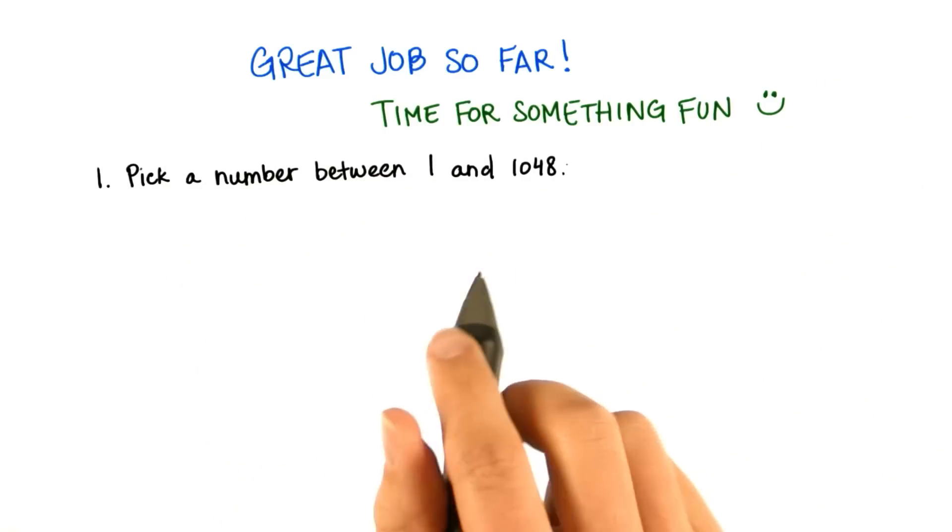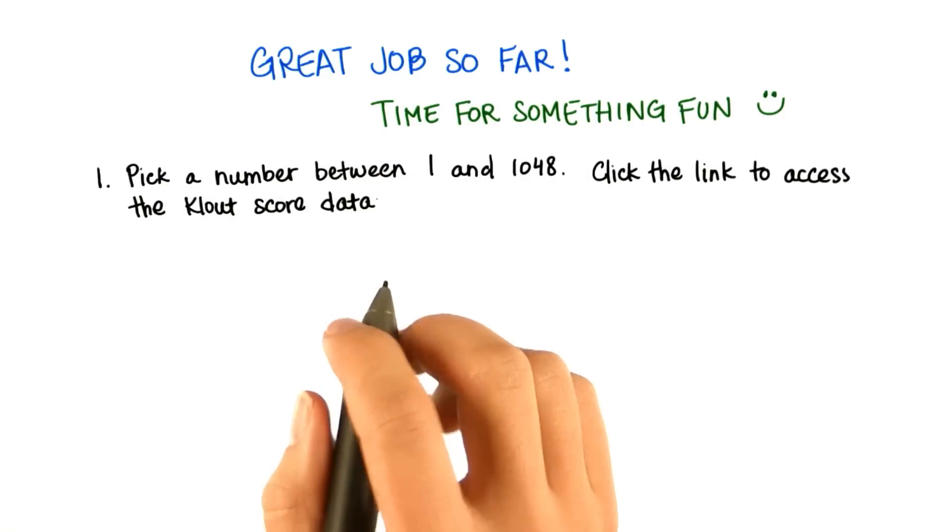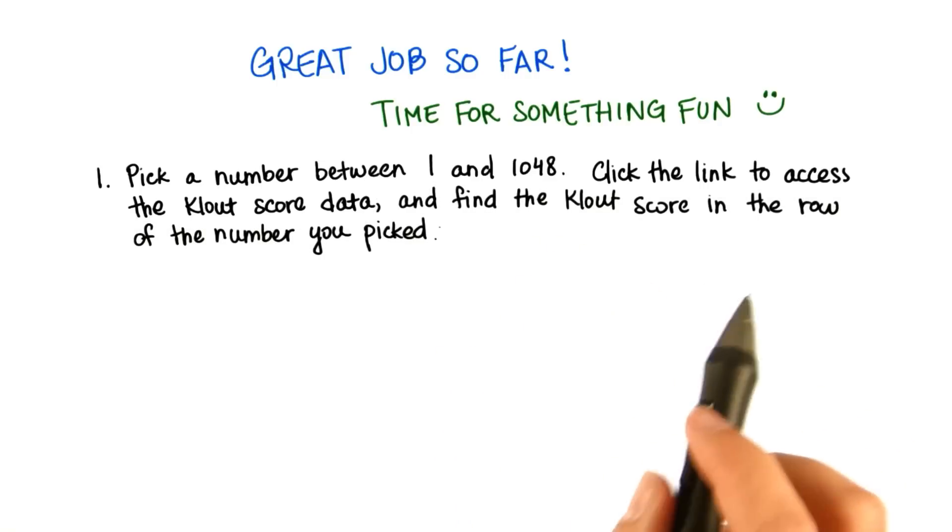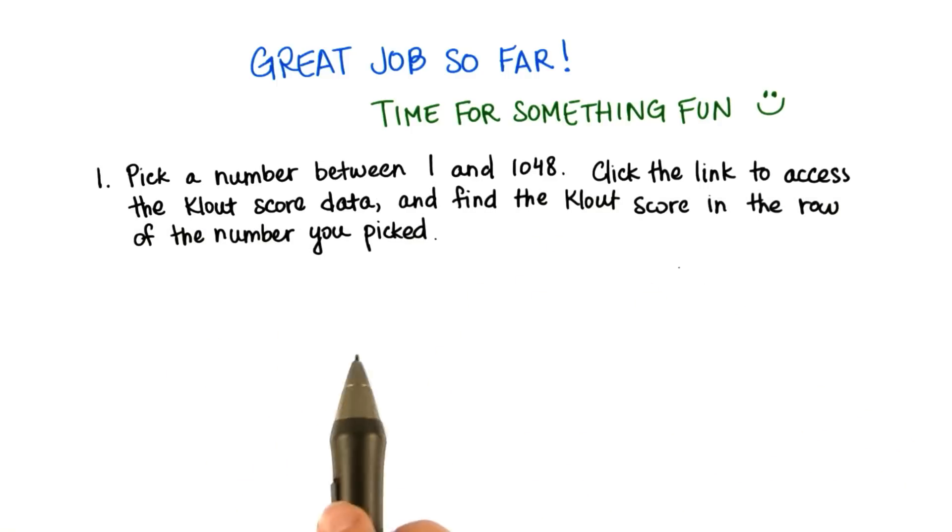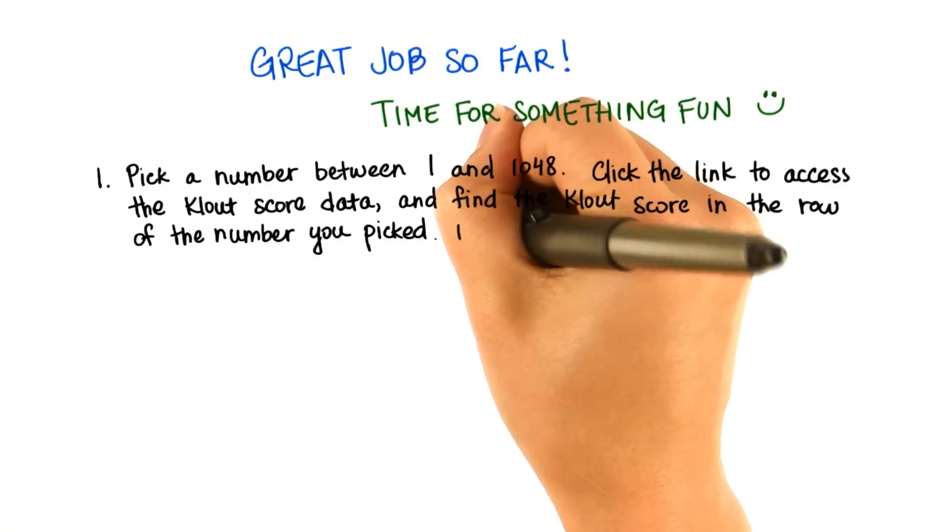Pick a number, any number, between 1 and 1048. Click the link to access the clout score data, and then find the clout score in the row of the number you picked. So if you picked the number 786, for example, go to row 786, find what clout score that is, then write it down.